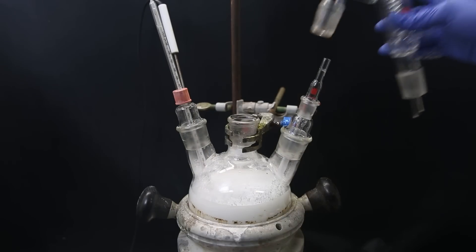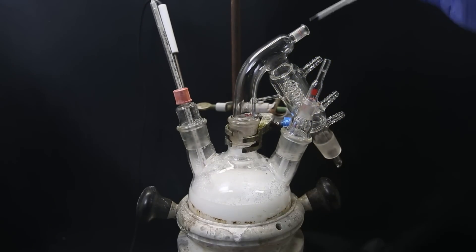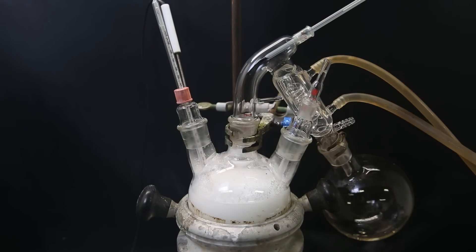I then remove the funnel and attach a short path distillation apparatus, but a regular distillation setup is also fine. I also just use a slightly dirty receiving flask, which is also not a problem. I already started heating the mixture and set the temperature of the mantle to 150°C.